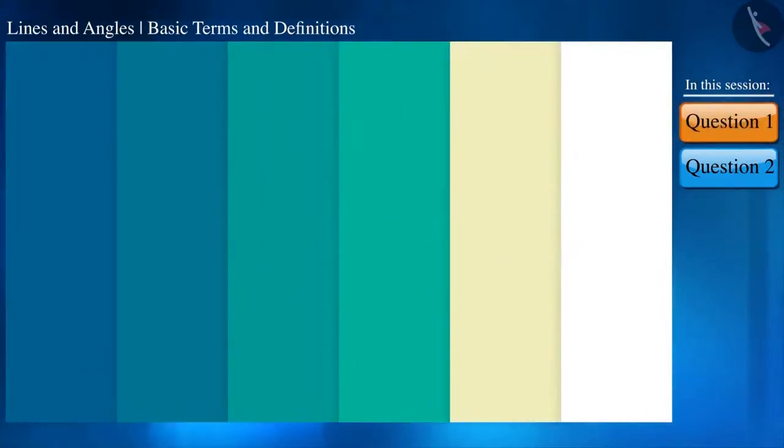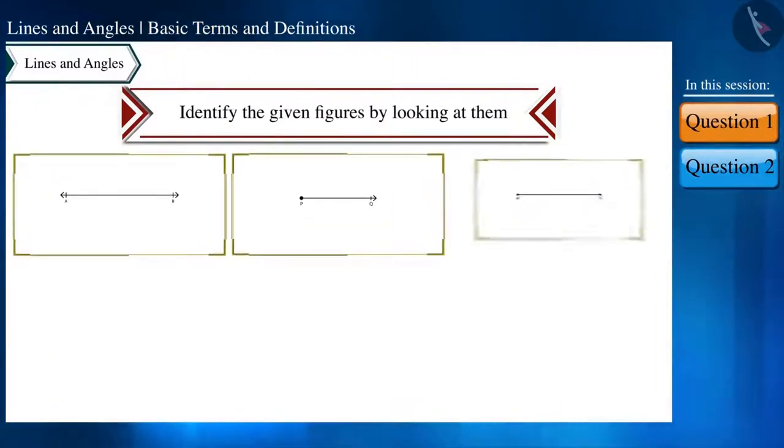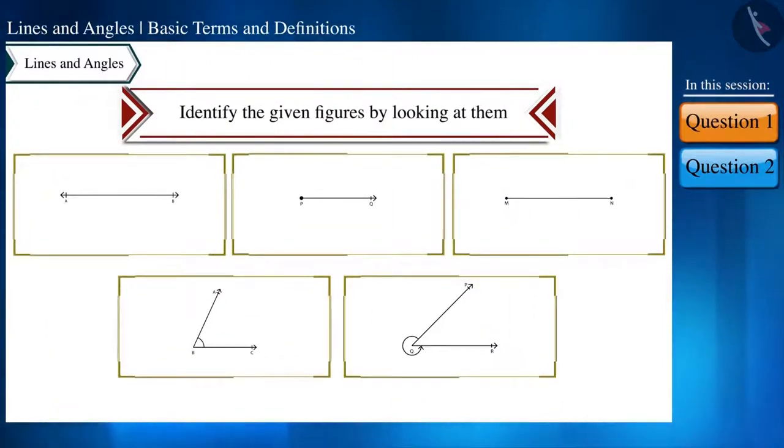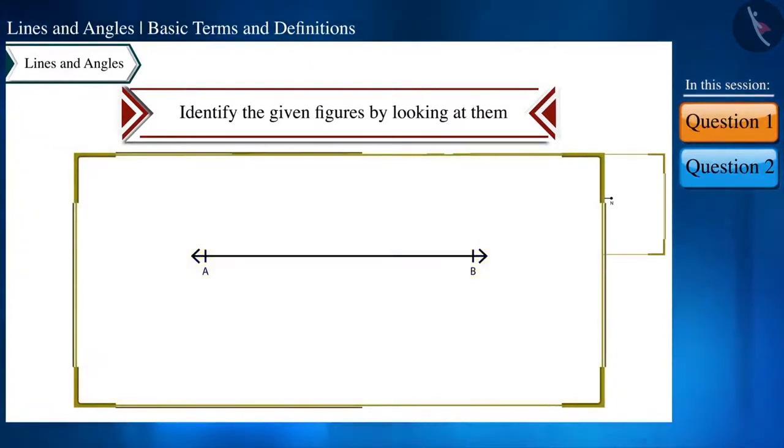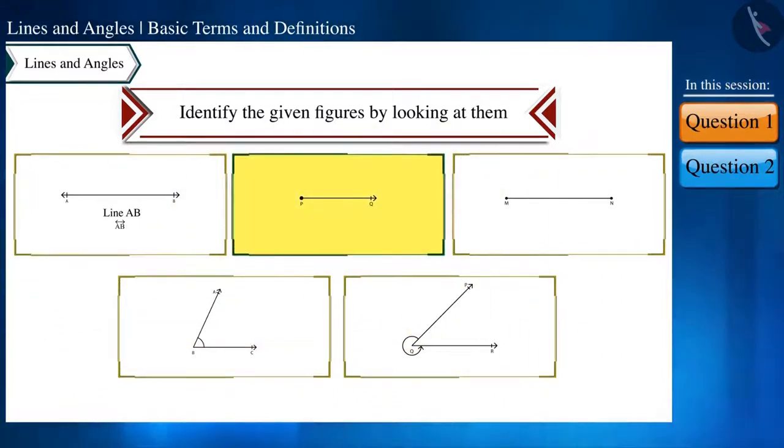Let's start with our first question: identify the given figures by looking at them. Friends, look at the first figure. Here on both sides there is a symbol of an arrow and this shows that it can be extended further in both directions. Therefore this is a line, line AB, and we represent it like this.